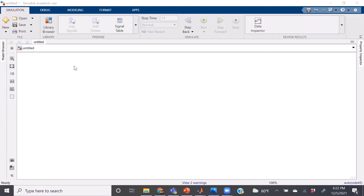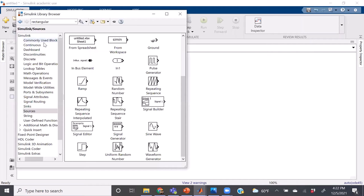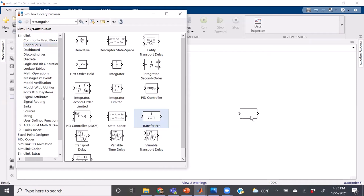If you go to library browser, you will see on the left all these different categories of blocks you can put into your workspace. Go to continuous and you will see a block called transfer function. Drag and drop this into the workspace, and you can double click it to change your values such as k and tau.